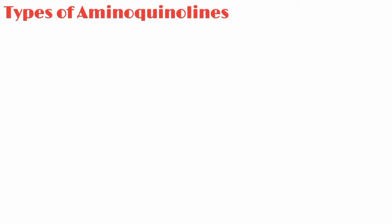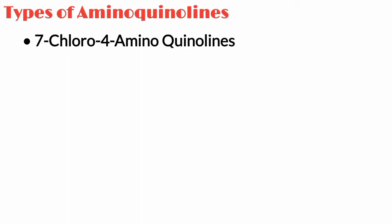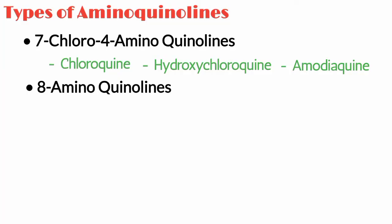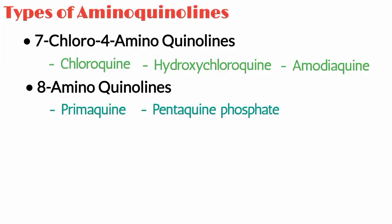There are two main types of aminoquinolones used as antimalarial drugs. The first type includes 7-chloro-4-aminoquinolones, such as chloroquine, hydroxychloroquine, and amodiaquine. The second type includes 8-aminoquinolones, such as primaquine, pentaquine phosphate, and pamaquine.